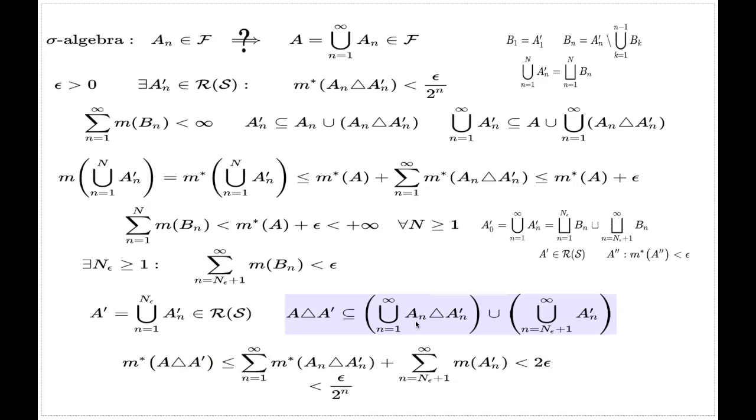Now I need a replacement for this embedding. As a replacement I claim the following embedding: that the symmetric difference of A and A dash is a subset of A symmetric difference with A not dash, so the complete union, and this little tail A double dash.